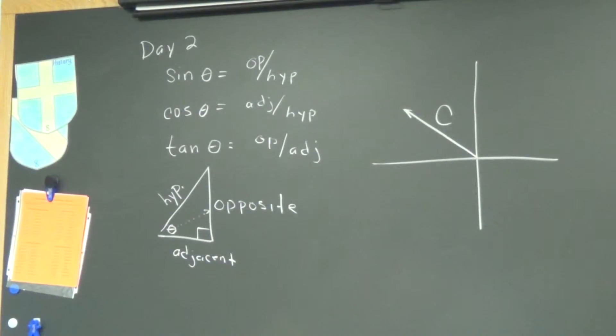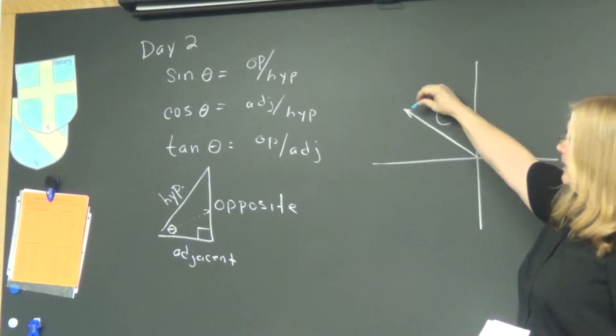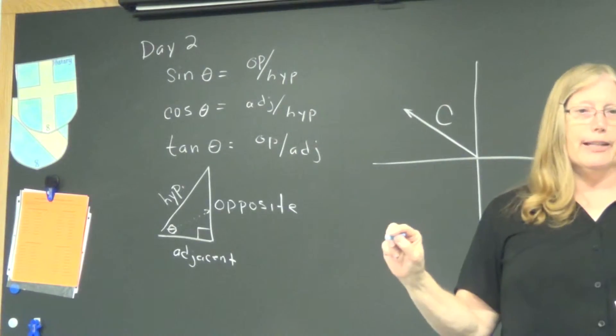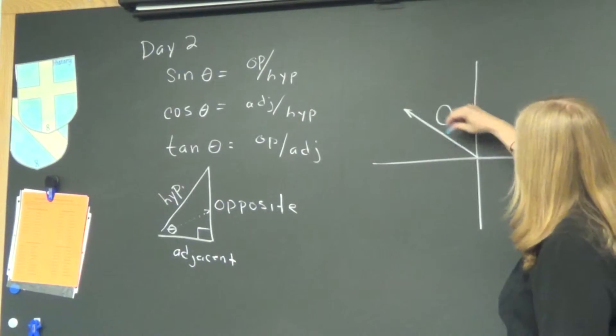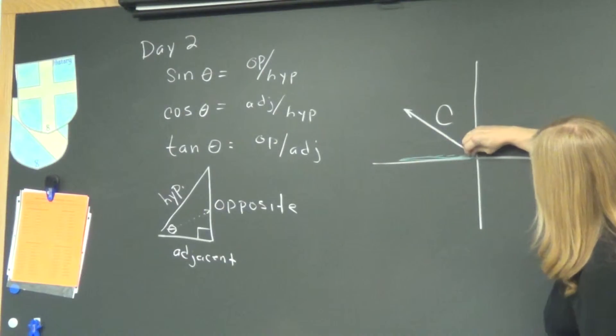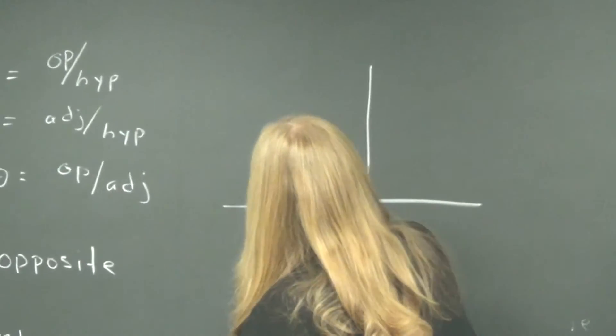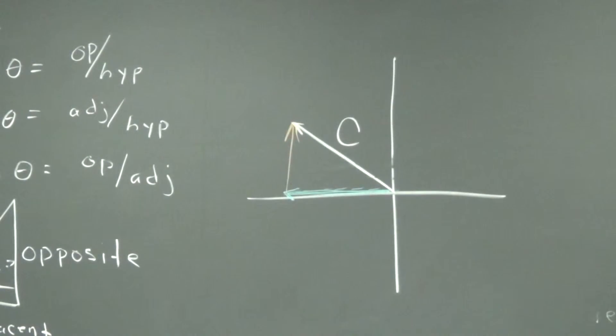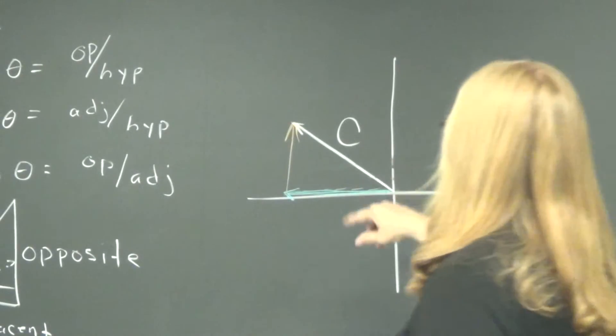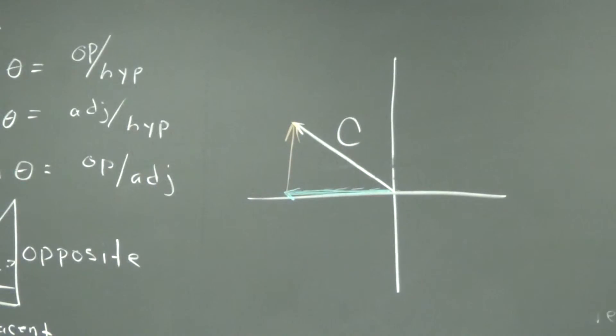Vectors are usually named with capital letters. So, I just picked C. And each vector has what's called an X and Y component. And some of you have seen that in math classes as well. To get the X component and the Y component, you start at the origin, and you end at the head of the vector. But your path may only be horizontal or vertical. So, to get from here to here, I go horizontally this way.